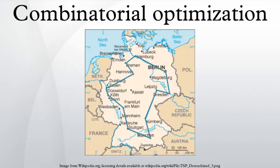Combinatorial optimization is a subset of mathematical optimization that is related to operations research, algorithm theory, and computational complexity theory. It has important applications in several fields, including artificial intelligence, machine learning, mathematics, auction theory, and software engineering.